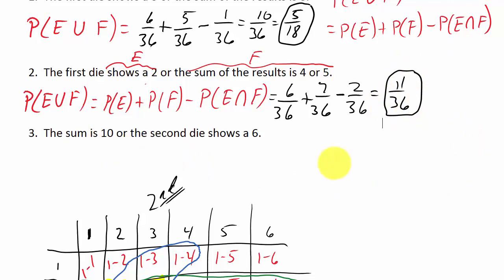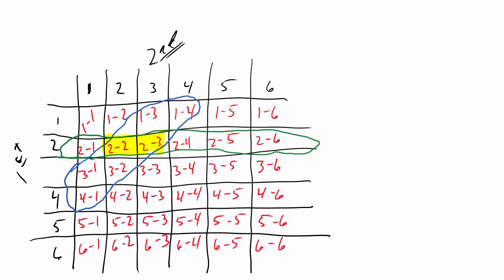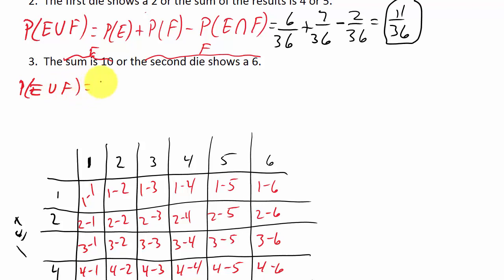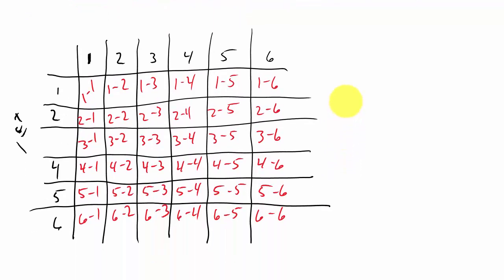Now let's look at the last problem. The sum is 10 — call that event E — or the second die shows a 6 — call that event F. P(E or F) = P(E) + P(F) − P(E ∩ F).